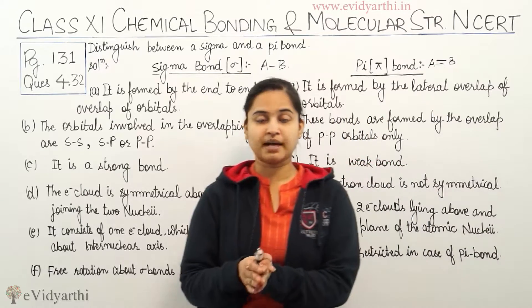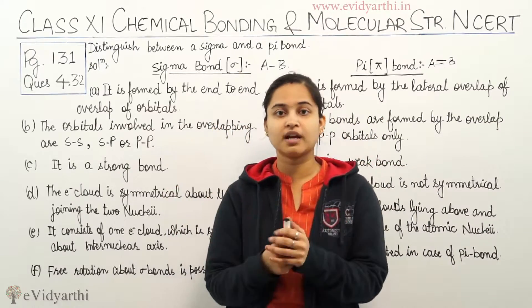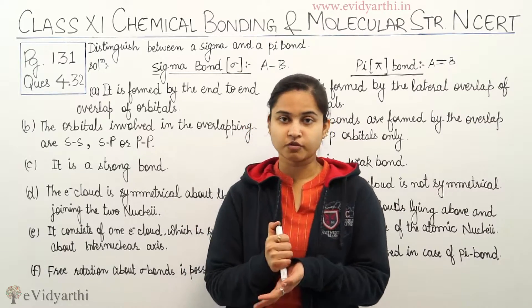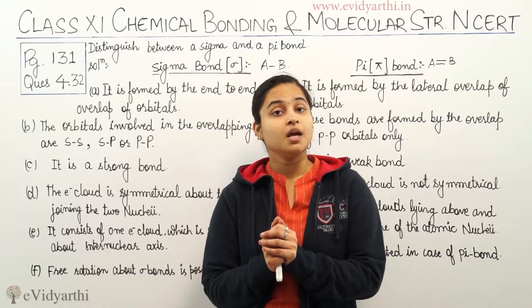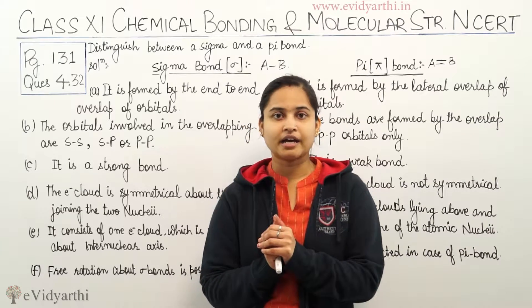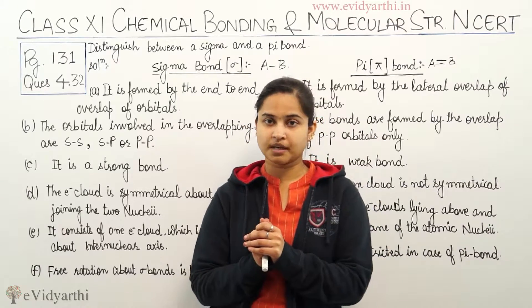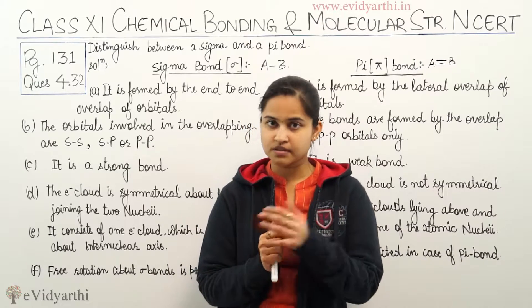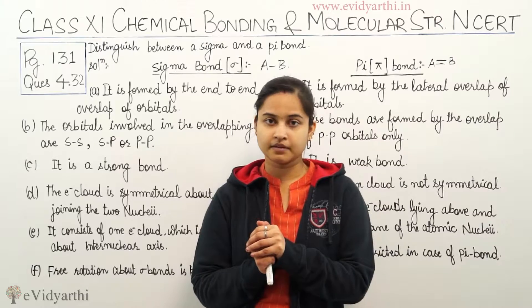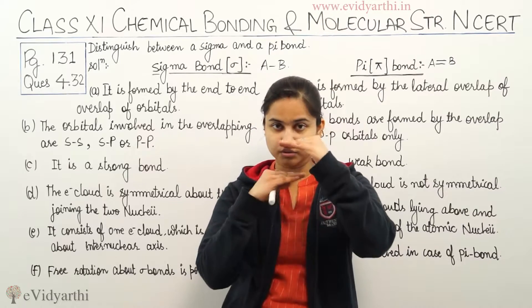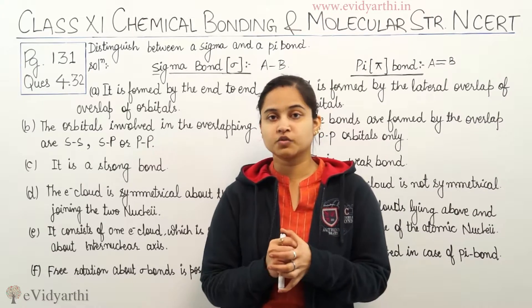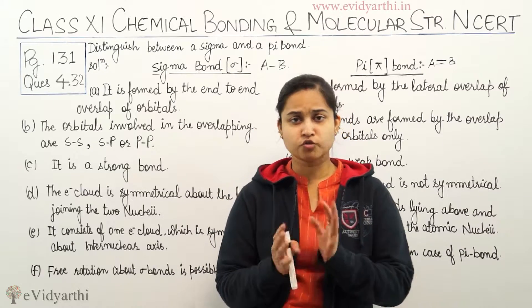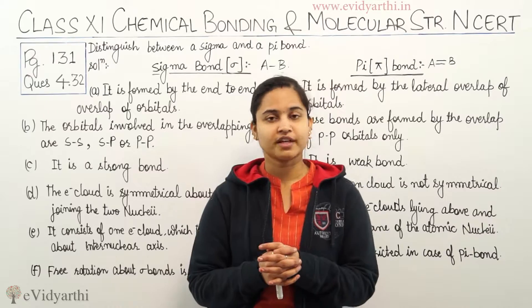Coming to the pi bond: pi bonds are formed by the lateral overlapping of the orbitals, and the orbitals involved in bond formation are P and P orbitals only. Pi bond is a weak bond and the electron cloud in pi bond is not symmetrical. There are two electron clouds above and below the plane of the nuclear axis, and rotation through the pi bond is restricted.